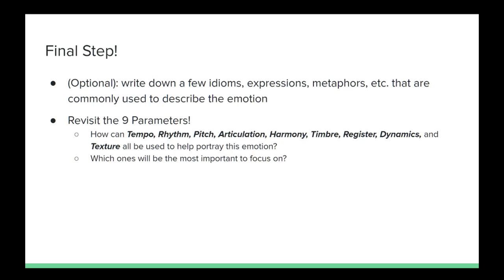They typically consist of highly descriptive language as well, and can be useful for inspiring musical ideas and concepts. Some quick examples would be 'Felt Like a Gut Punch' to describe rejection, or 'Butterflies in Your Stomach' to describe young love, and 'Heart Skipped a Beat' to describe surprised nerves or excitement. With that, it is now time to revisit our nine parameters one last time, and jot down any ideas you may have for translating this emotional experience into a musical one.